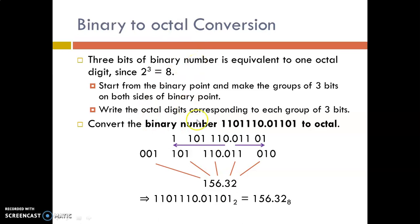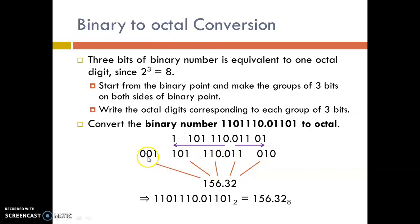Here we will see how to convert this binary number to octal. This is the decimal point. We make groups of 3 bits — for the integer part we move to the left and for the fractional part we move to the right. For a group with only one digit, we include 0s; similarly for a group with only 2 digits. Then we write the octal representation: 001 is 1, 101 is 5, 110 is 6, 011 is 3, 010 is 2. This is how you convert a binary number to an octal number.